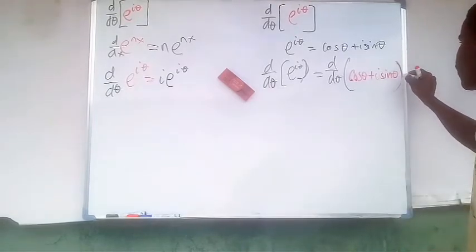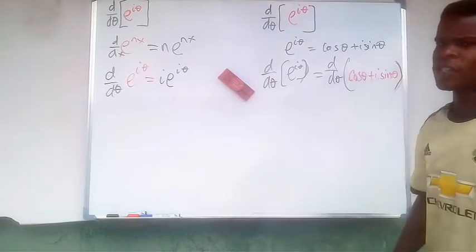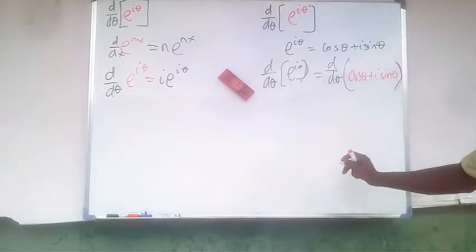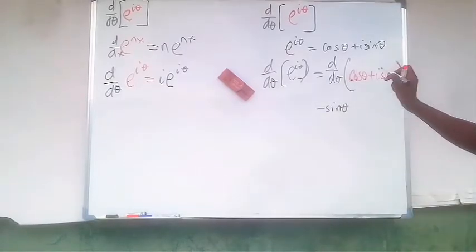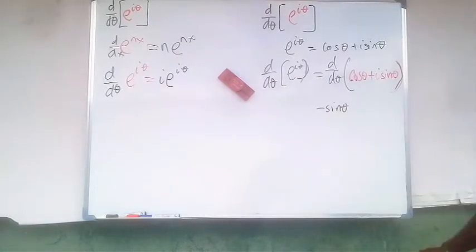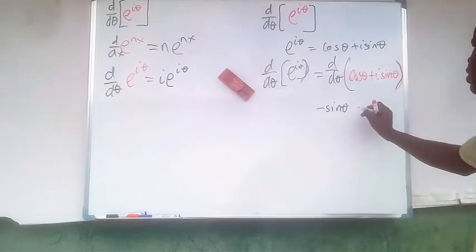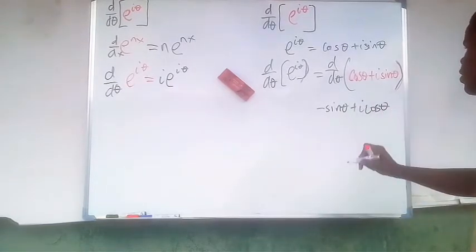So doing that, we're just going to have the derivative of cosine theta with respect to theta, which is negative sine theta, and the derivative of sine theta, where i is constant. The derivative of sine theta with respect to theta is just cosine theta. That's plus i cosine theta.